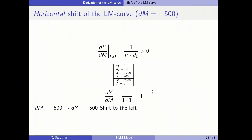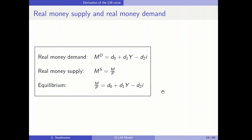Now I would like to talk about the LM part. Let's look at the equations. Real money demand depends on an autonomous component, then a term symbolizing the transaction motive which depends on GDP, and money demand also depends on the interest rate. There is a negative relationship between the interest rate and money demand because of the opportunity costs of holding money.